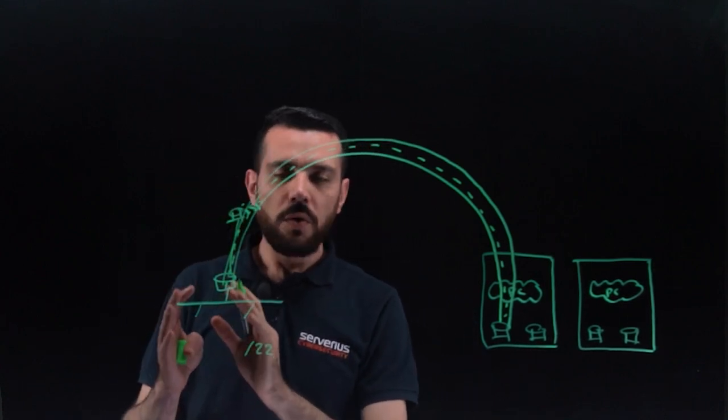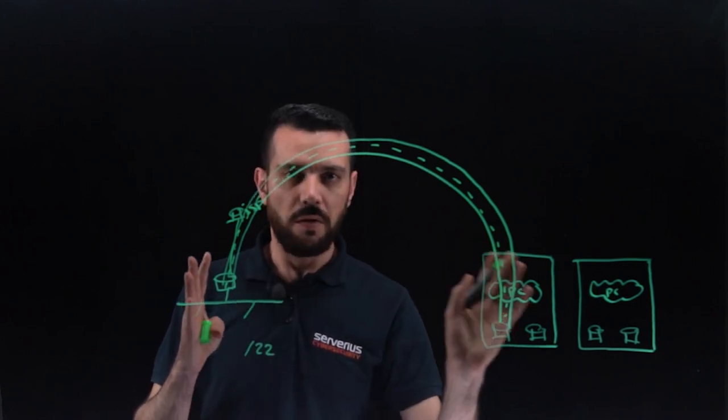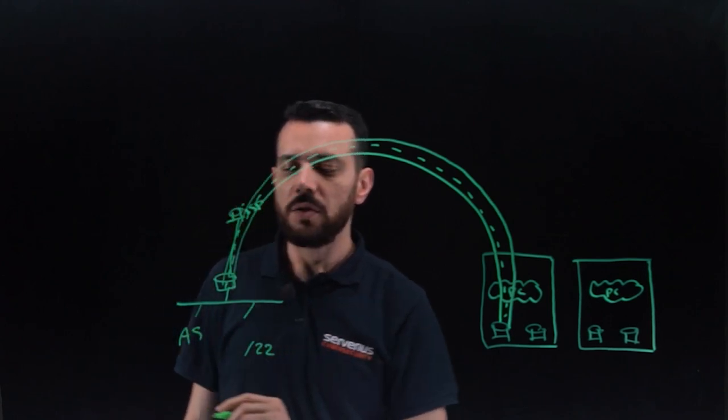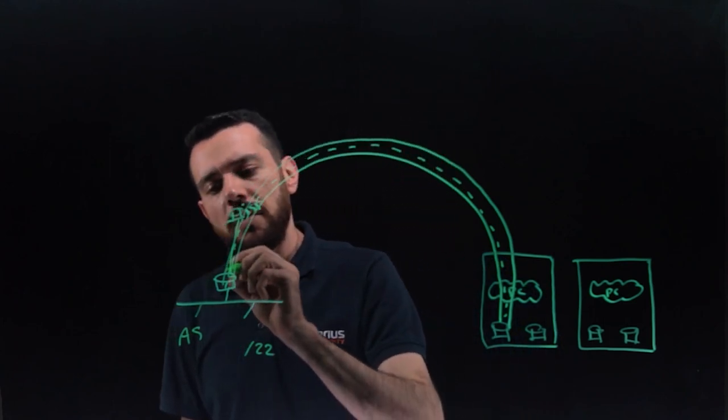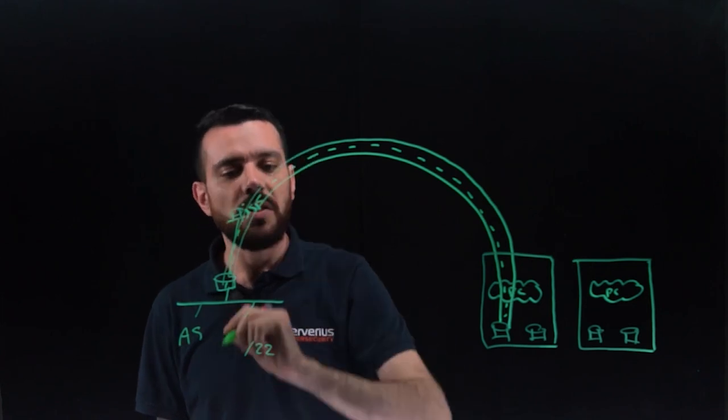And by the way, if you want to use this protection, remote protection, you should have your own autonomous system. So, basically, you announce your prefix to your ISP, so it's reachable from the internet.